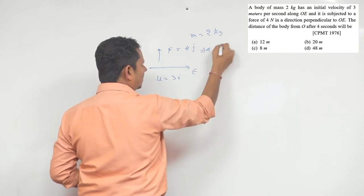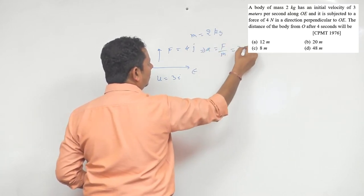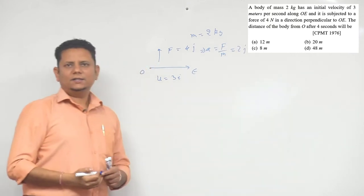which implies acceleration will be equal to force by mass. So that will be equal to 2j cap. This will be our acceleration.